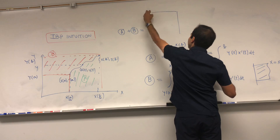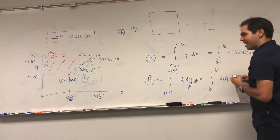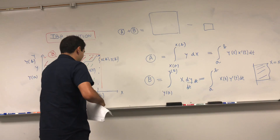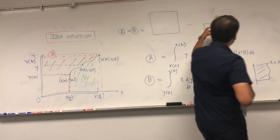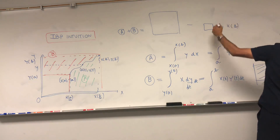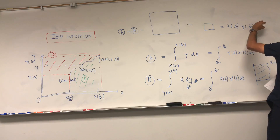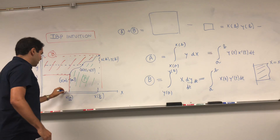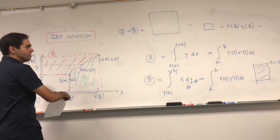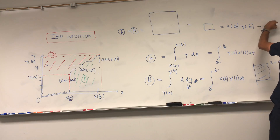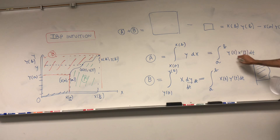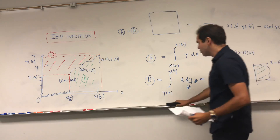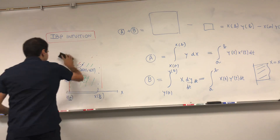The big rectangle has sides x of b and y of b, so its area is x of b times y of b. The small rectangle has sides x of a and y of a, so its area is x of a times y of a. Therefore A plus B equals x of b times y of b minus x of a times y of a. And A is the integral of y times x prime, while B is the integral of x times y prime.